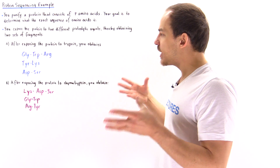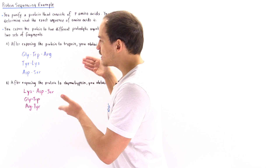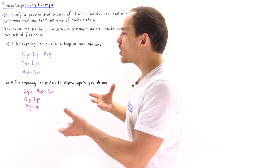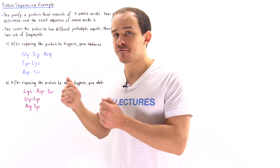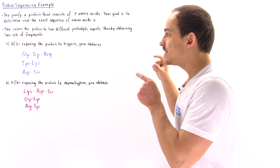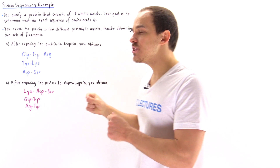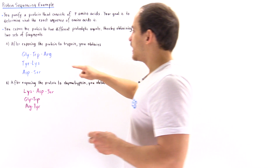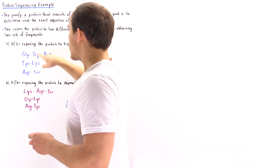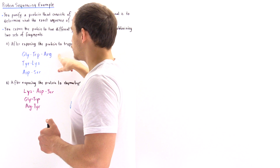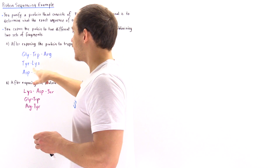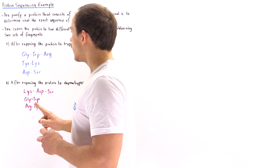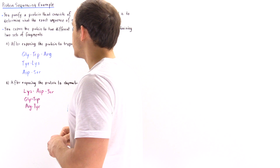Now that you have two sets of fragments, you want to use the overlapping regions to sequence the fragments in the correct order. From experiment one we have glycine-tryptophan-arginine, tyrosine-lysine, and aspartate-serine. There is only a single glycine in the entire sequence.